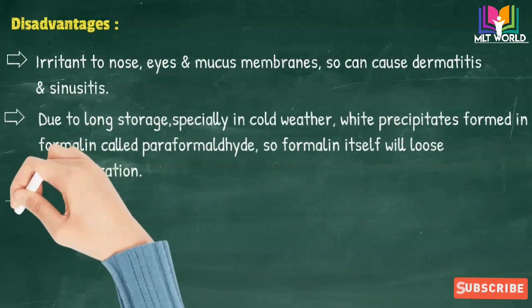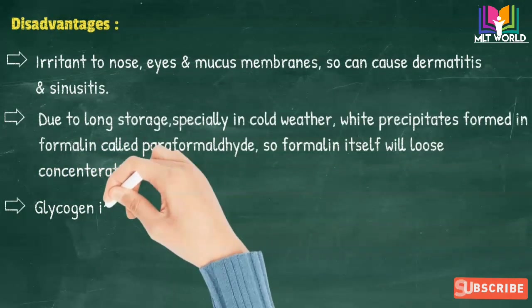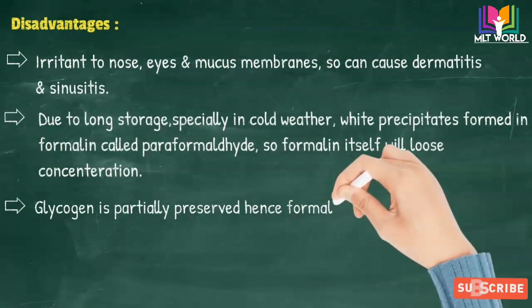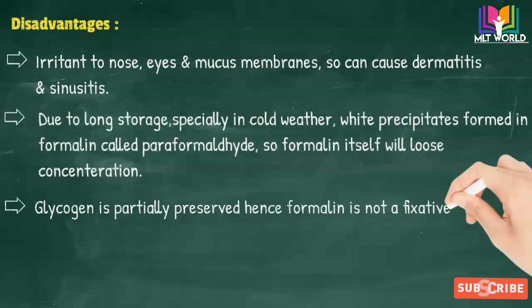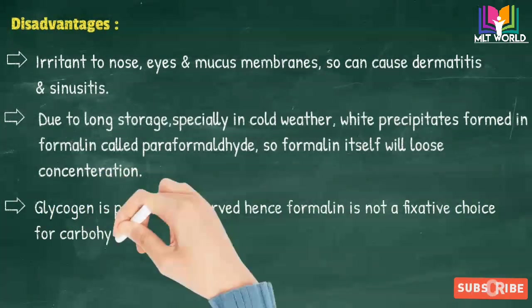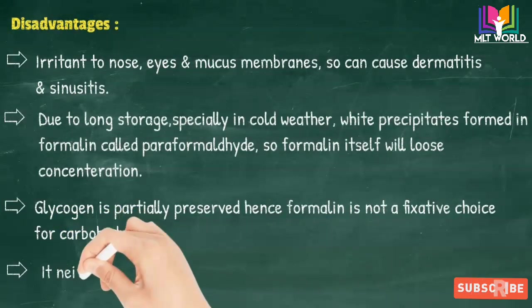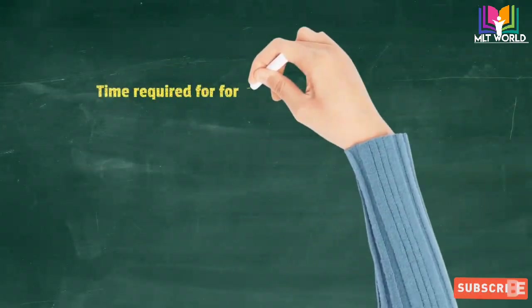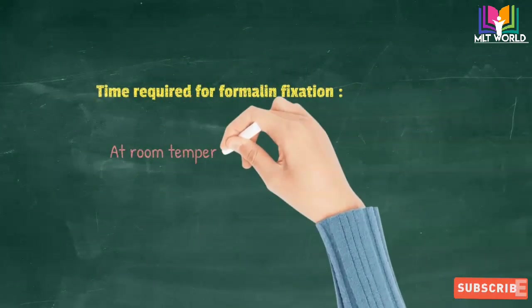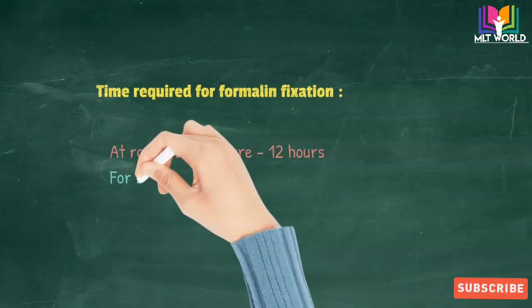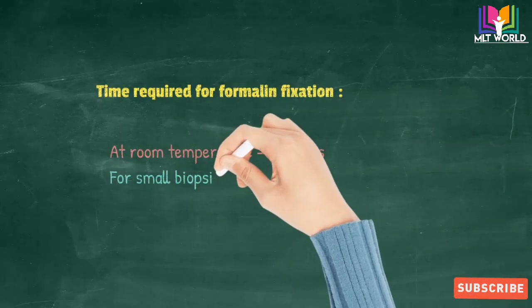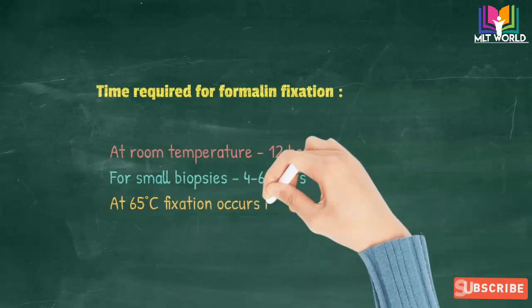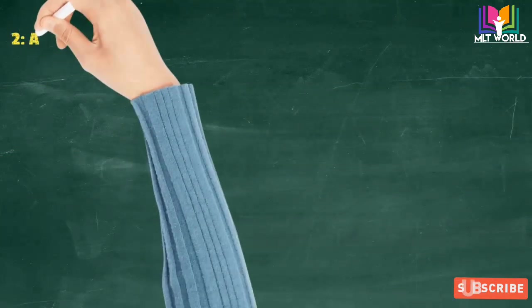Glycogen is partially preserved, so we cannot use formalin for carbohydrate fixation. It neither preserves nor destroys fat. Time required for formalin fixation at room temperature is 12 hours, for small biopsies 4 to 6 hours, and at 65 degrees, fixation occurs in 2 hours.